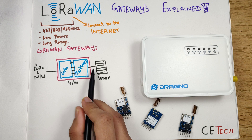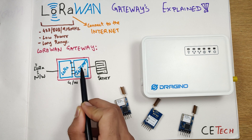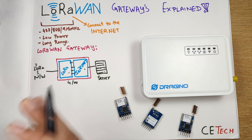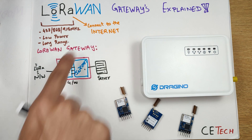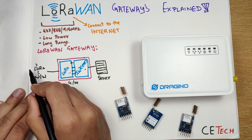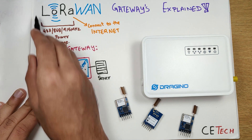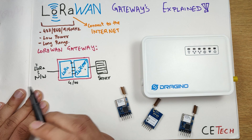This works vice versa as well — information present on a server can be transmitted from the server to the internet chip, then from the internet chip to the LoRa chip, and from the LoRa chip to the LoRa network. That is how a gateway bridges the gap between the LoRa network and the internet, creating a Wide Area Network called a LoRaWAN network. If your LoRa network is connected to the internet, you call it LoRaWAN; if it's standalone, it's just a LoRa network.